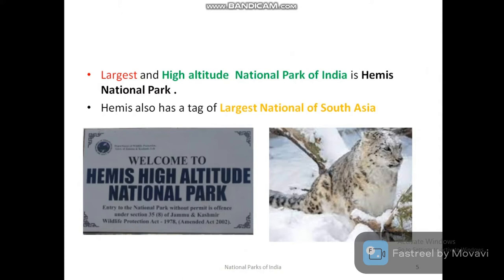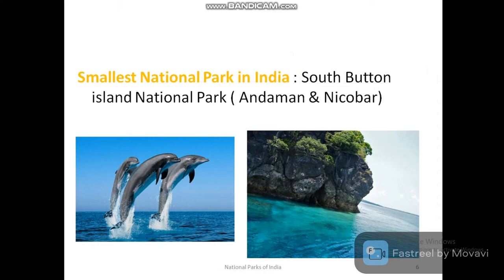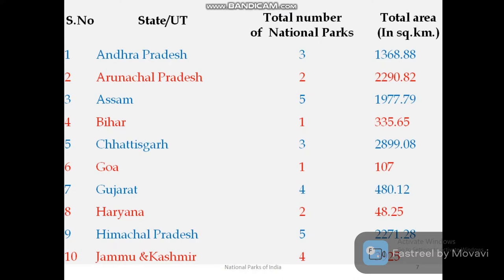The largest and highest-altitude national park of India is Hemis National Park, located in Jammu and Kashmir. Hemis also holds the tag of largest national park in South Asia and is popular for its snow leopard. The smallest national park in India is South Button Island National Park, located in Andaman and Nicobar.